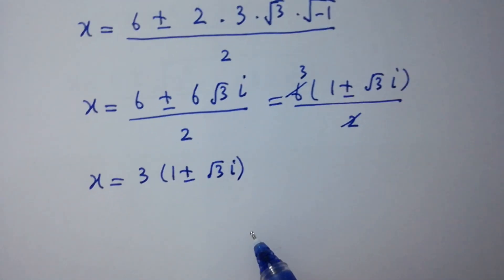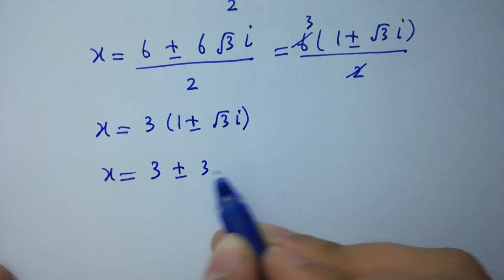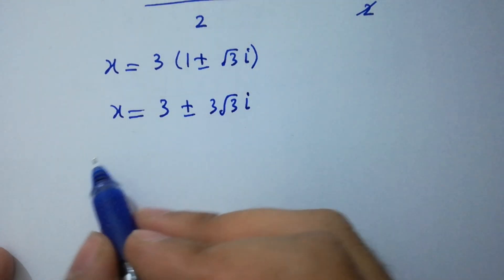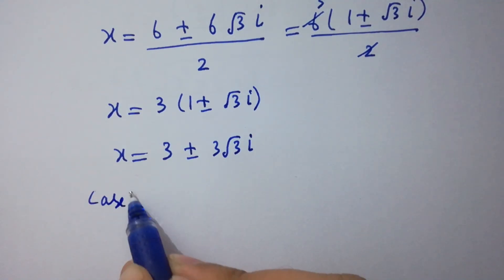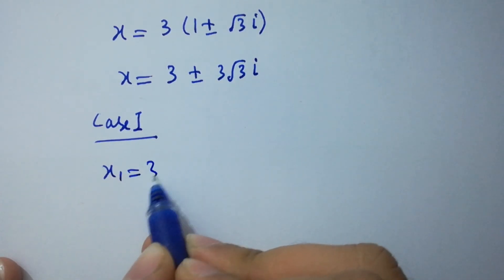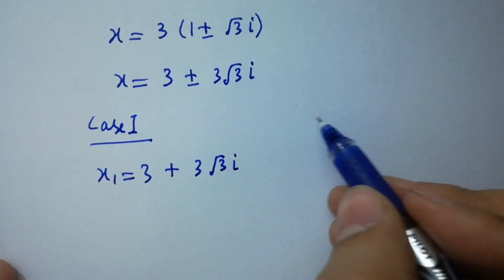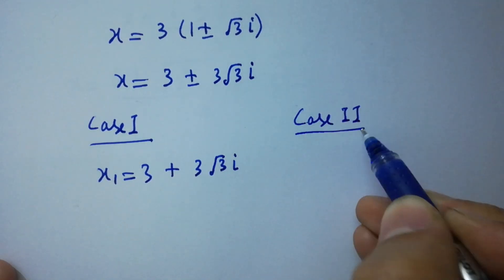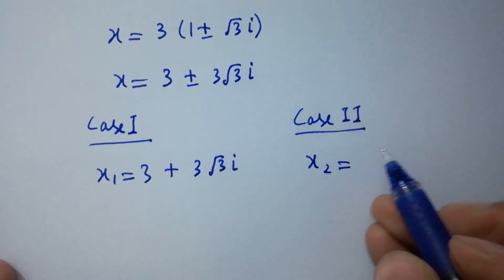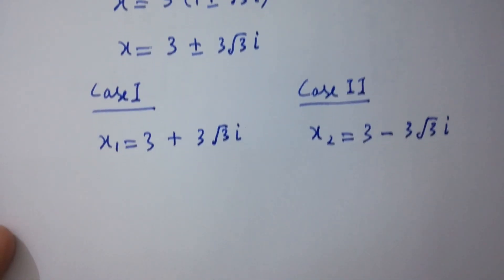This simplifies to x equals 3 times (1 plus or minus square root of 3 i). So finally, x equals 3 plus or minus 3 square root of 3 i. We have two cases: Case 1: x₁ equals 3 plus 3 square root of 3 i, and Case 2: x₂ equals 3 minus 3 square root of 3 i.